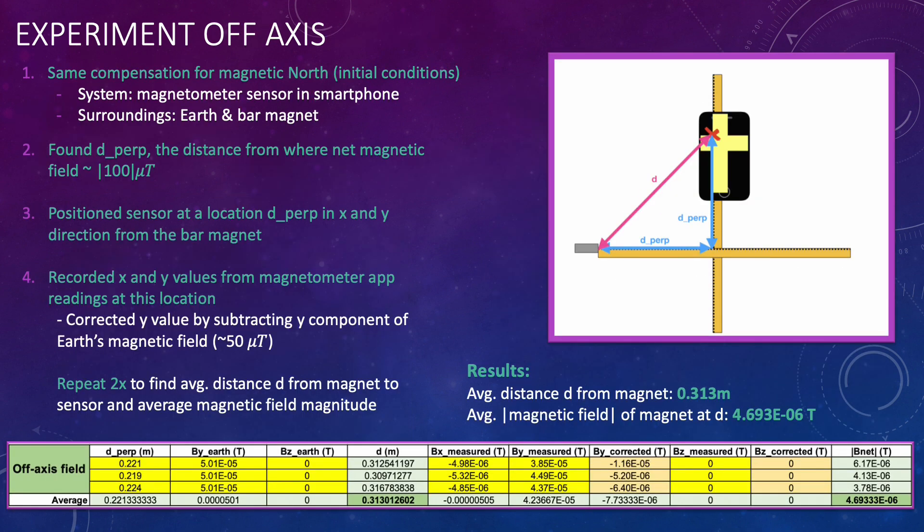I followed a similar procedure for the off-axis experiment compensating for magnetic north again. The system and surroundings here are the same as in the on axis experiment. I then found the d_perp which is the distance from the magnet such that the net magnetic field is around 100 microteslas. I then positioned my sensor at a location d_perp in both the x and y directions from the bar magnet forming a right triangle.